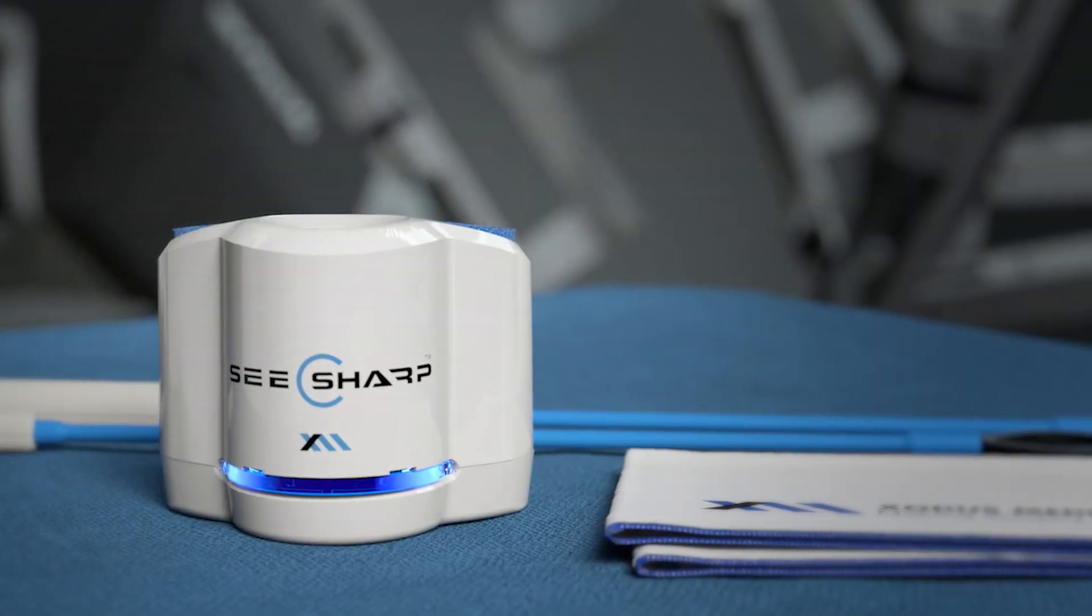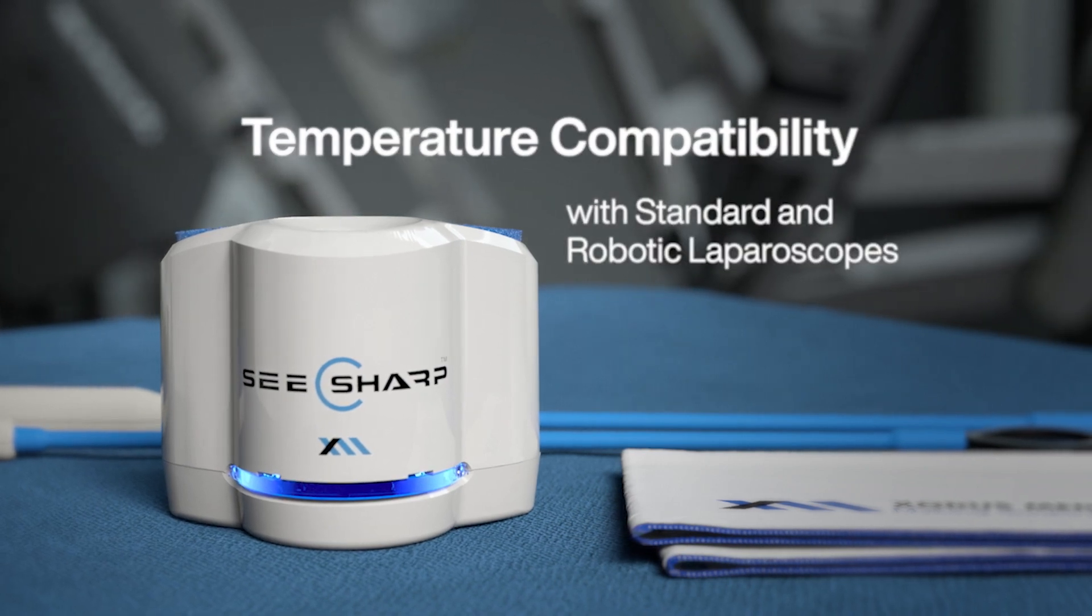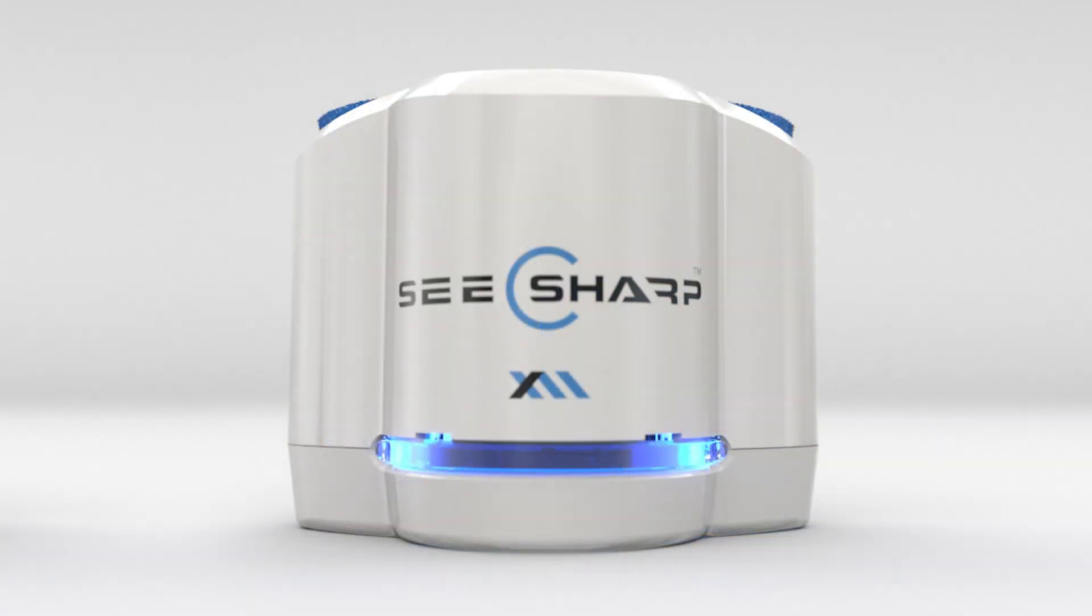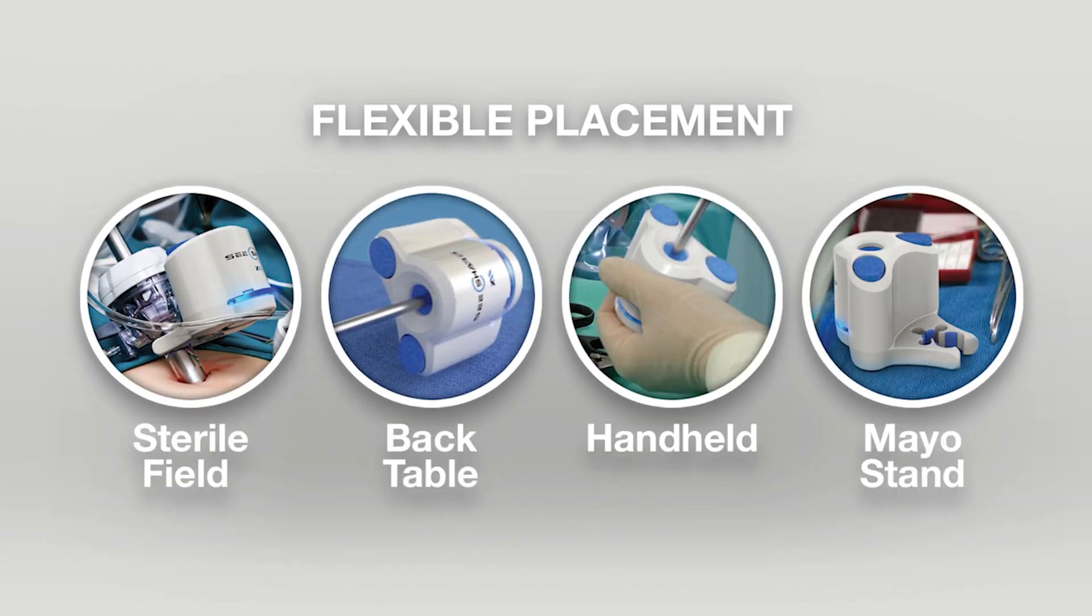The C-Sharp operates within a thermostatically controlled temperature range, safe for both standard and robotic laparoscopes. The C-Sharp is compact and stable, allowing for flexible placement on any sterile field.